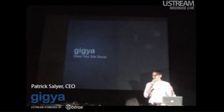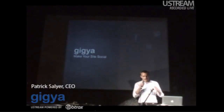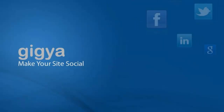But today's about APIs, and Gigya is about social APIs — that's where we focus. So I thought I would start by getting real old school. Where did social identity APIs begin?